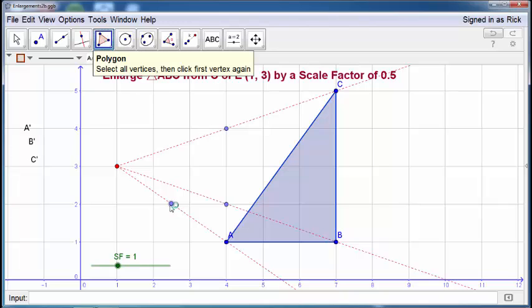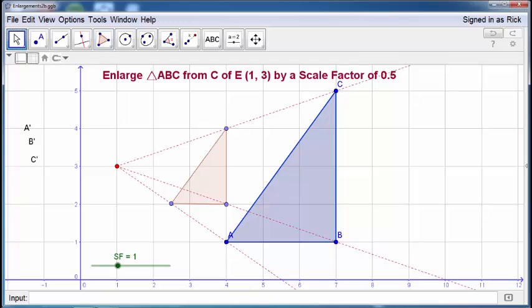Now is my favorite bit, which is joining up the vertices. And there we have it. We have our enlargement of 0.5. Of course, the one thing I've not done yet is label my vertices. So A must become A dash, B becomes B dash, and C becomes C dash.